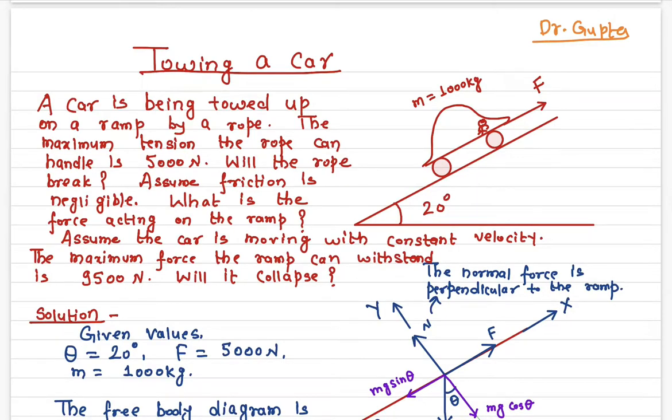In this problem, we're going to talk about the towing of a car on an inclined plane. Let's say we have an inclined plane and the angle of inclination is at 20 degrees and a car is being towed up.